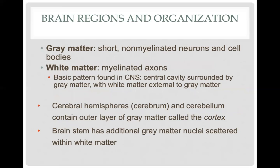Before getting started, I want you to distinguish gray matter versus white matter. Gray matter consists of short, non-myelinated neurons and cell bodies — if you have a part of the brain appearing as a darker color, that is gray matter, and a lighter color would be white matter. Clusters of cell bodies together will have a grayish appearance, and clusters of non-myelinated axons or neurons within a region of the brain will also appear as gray matter.